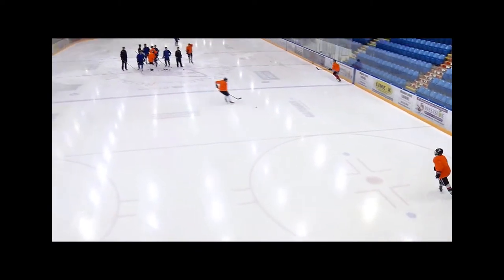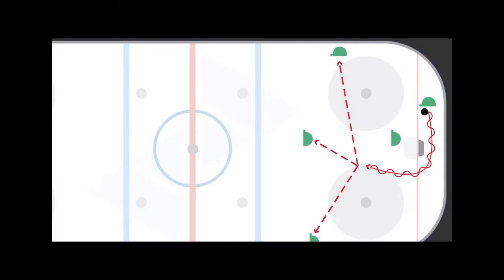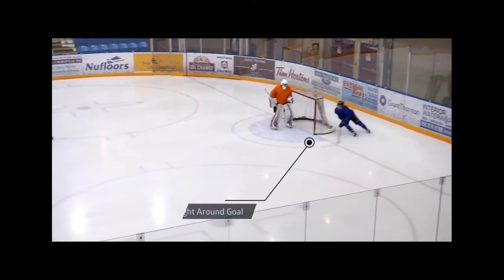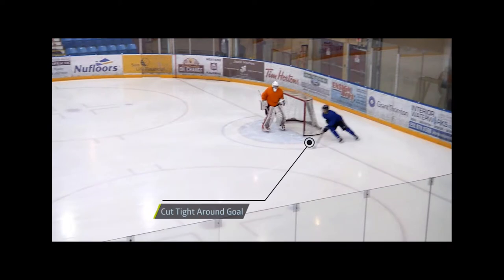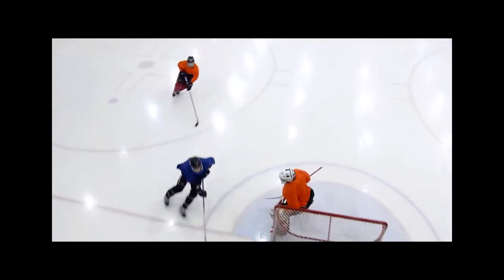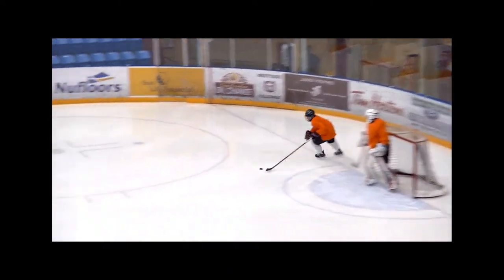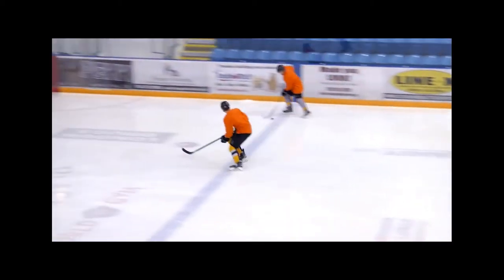Often our skaters are striding to retrieve the puck with an opposing player hot on their trail. If there is immediate pressure, we can use the wheel option. As the skater gains possession, they move behind the net and cut tight around the far goal post, using it to build speed and create a greater separation between themselves and the trailing forechecker. From this position, the ice is open, their legs are active, and they search for a passing option before hitting the blue line.